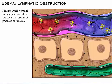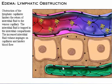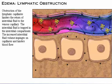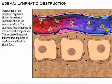Click the lymph vessel to see an example of edema that occurs as a result of lymphatic obstruction. Obstruction of the lymphatic capillaries, which can occur with surgical removal of lymph nodes, hinders the return of interstitial fluid to the venous capillary. The interstitial fluid is trapped in the interstitial compartment. This type of edema is significant because the increased interstitial fluid volume impinges on capillaries and hinders blood flow.